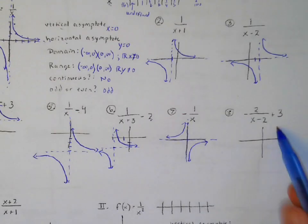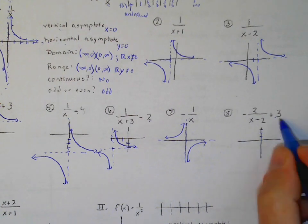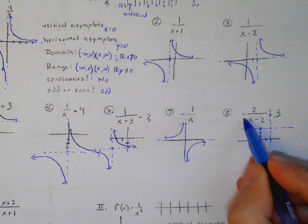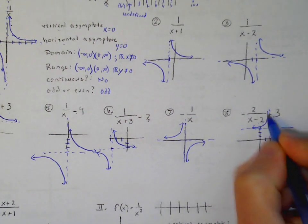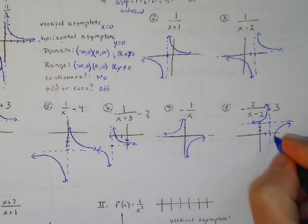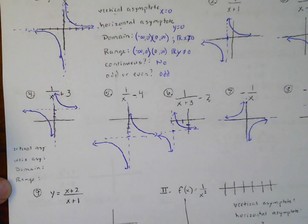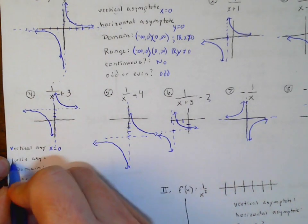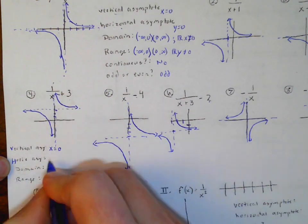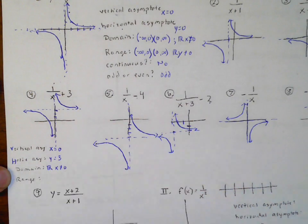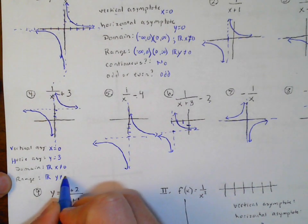If there's a negative out front, it reflects the graph across the axes. So instead of being in the first and third quadrants, it's going to be in the second and fourth quadrants. With all of these, we have to identify our vertical asymptote, horizontal asymptote, domain, and range. The domain is always all real numbers except x cannot equal the vertical asymptote value, and the range is every number except y cannot equal the horizontal asymptote value.